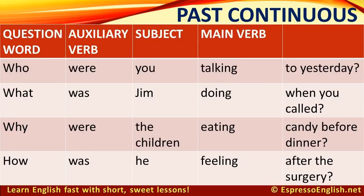In the past continuous, the auxiliary verb is 'was' or 'were,' and the main verb also has the -ing form. For example: Who were you talking to yesterday? What was Jim doing when you called? Why were the children eating candy before dinner? How was he feeling after the surgery?